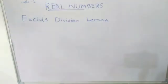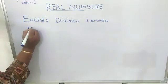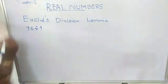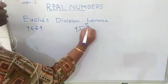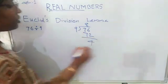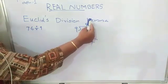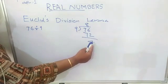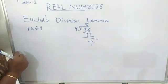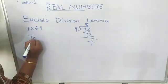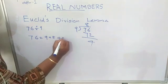Let us take an example. Let us see the division of a positive integer 76 by another integer 9. 76 divided by 9. Here, 76 is the dividend, 9 is the divisor, 8 is the quotient, and 4 is the remainder. The remainder is always less than the divisor.